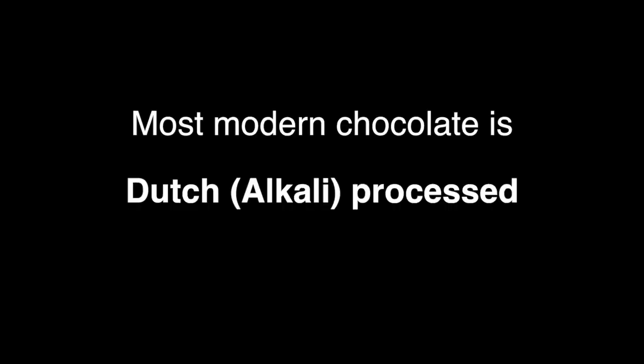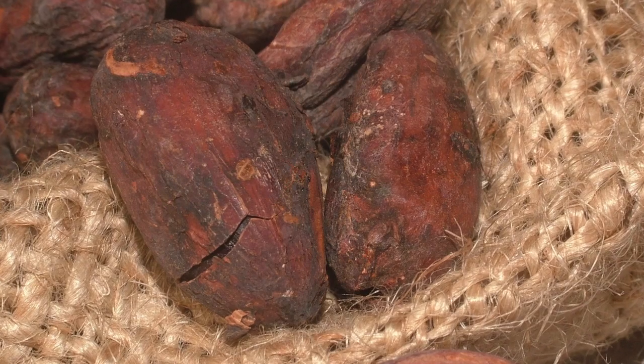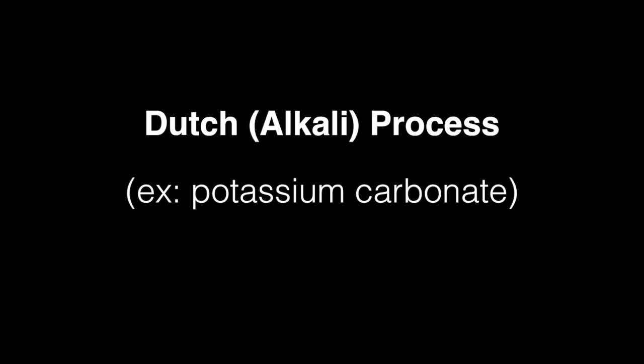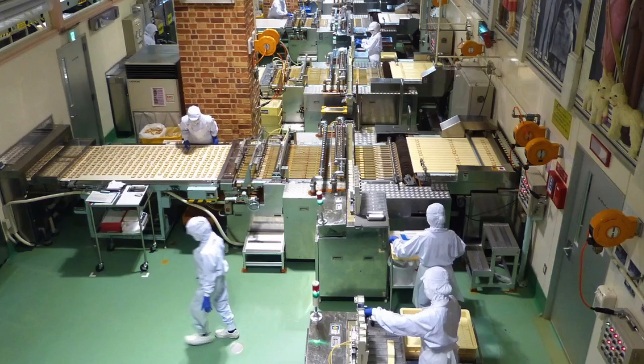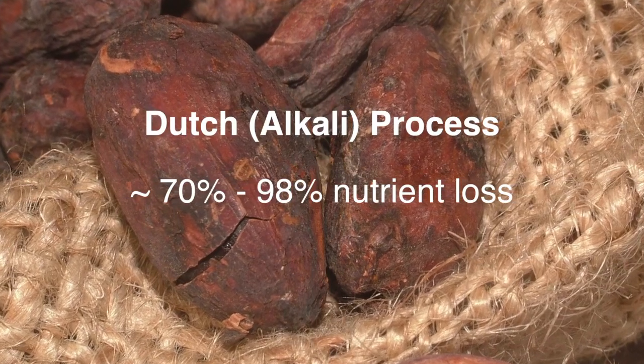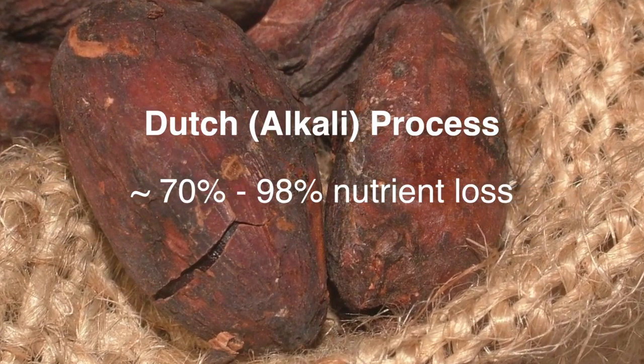Conventional chocolate is processed typically based on the Dutch alkali process. The beans are roasted and then treated with a strong alkali salt, something like potassium carbonate typically. Then further high-heat milling is applied and more processing and heat treatment depending on specific needs. This very process has been estimated by studies to reduce anywhere from about 70 to 98 percent of the cacao bean's nutritional benefits, most specifically impacting the antioxidants the cacao is so highly acclaimed for, but also the vitamins and minerals which are highly denatured or destroyed altogether.